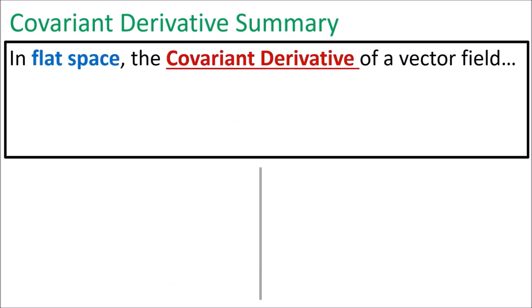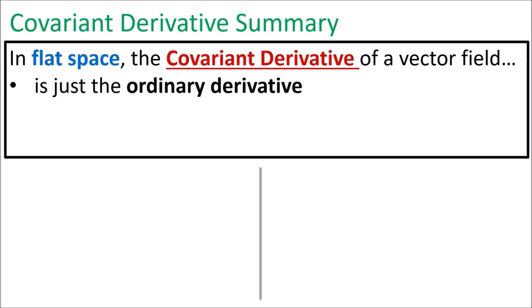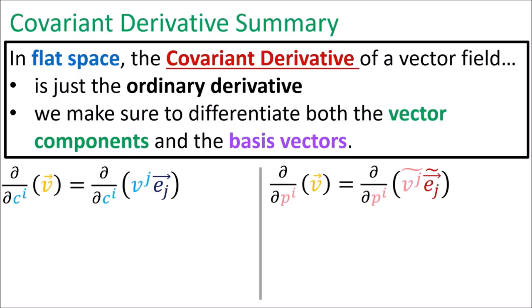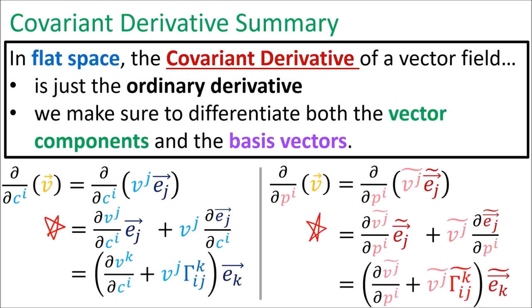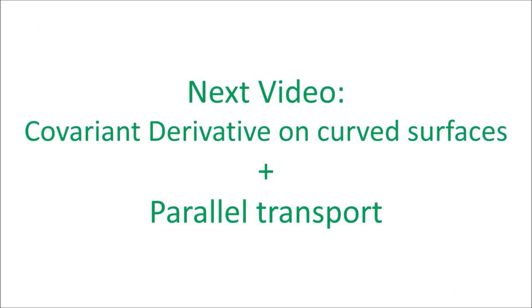In summary, in flat space the covariant derivative of a vector field is just the ordinary derivative where we use the product rule to differentiate both the vector components and the basis vectors. We can write it explicitly or use the Christoffel symbol notation. If you liked this video and want to learn more about the covariant derivative, please check out the next video where I cover the covariant derivative on curved surfaces and talk about parallel transport.